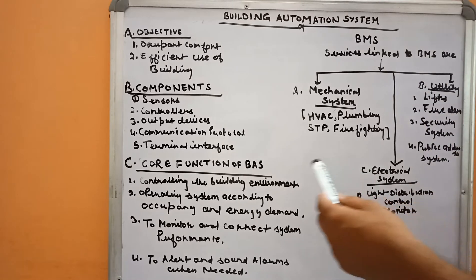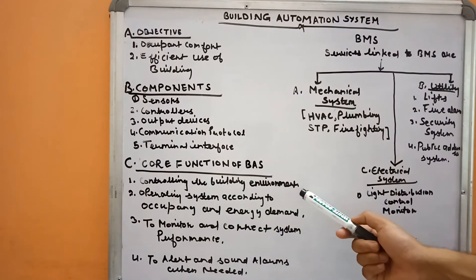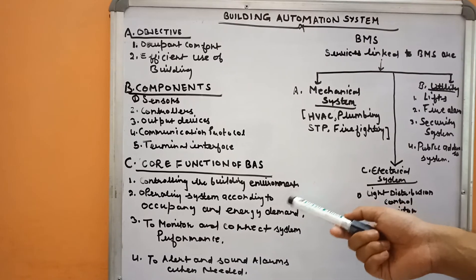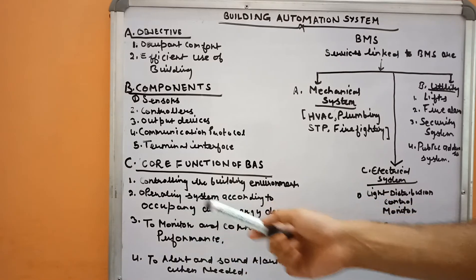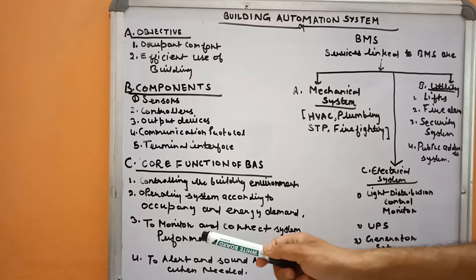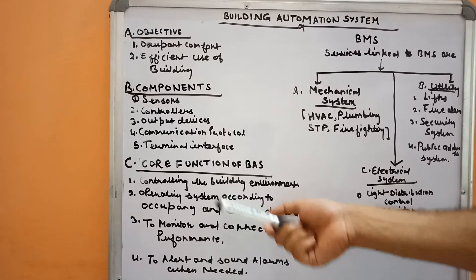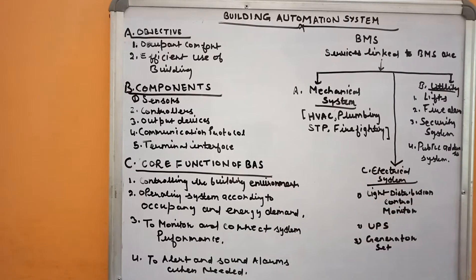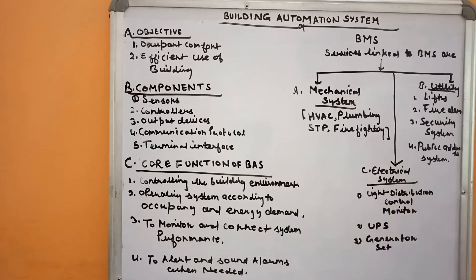The core functions of BAS: first is controlling the building environment in terms of temperature, climate, humidity, and other components. Second is operating the system according to occupancy and energy demand — the system works according to the occupancy rate in the building and the real-time energy demand based on outside design conditions and inside occupancy rate.